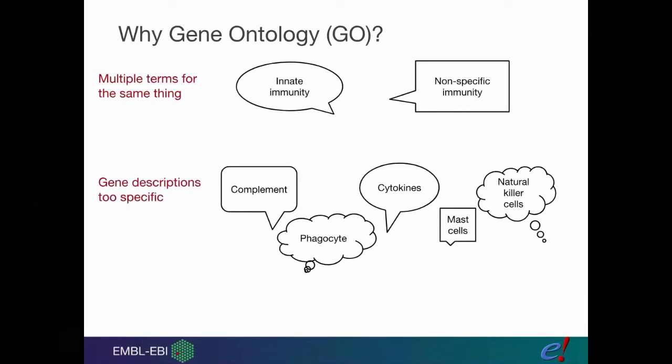Another problem is the specificity. I might have written my paper describing how my gene is involved in natural killer cells and not at any point mention the phrase innate immunity or non-specific immunity, because natural killer cells is just part of those two processes. So again, a search for those things wouldn't find my paragraph.